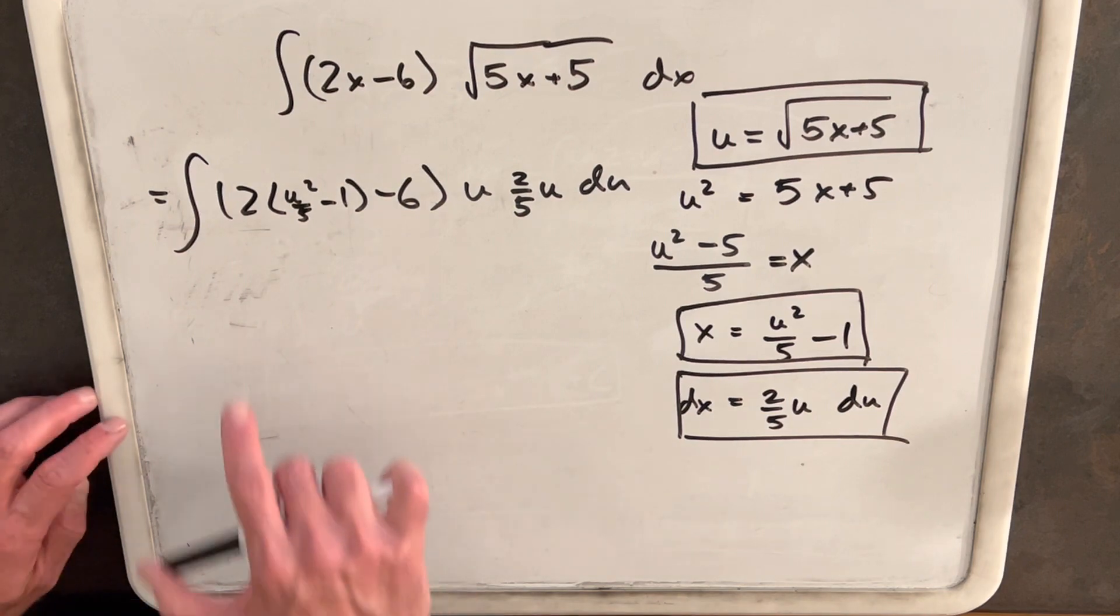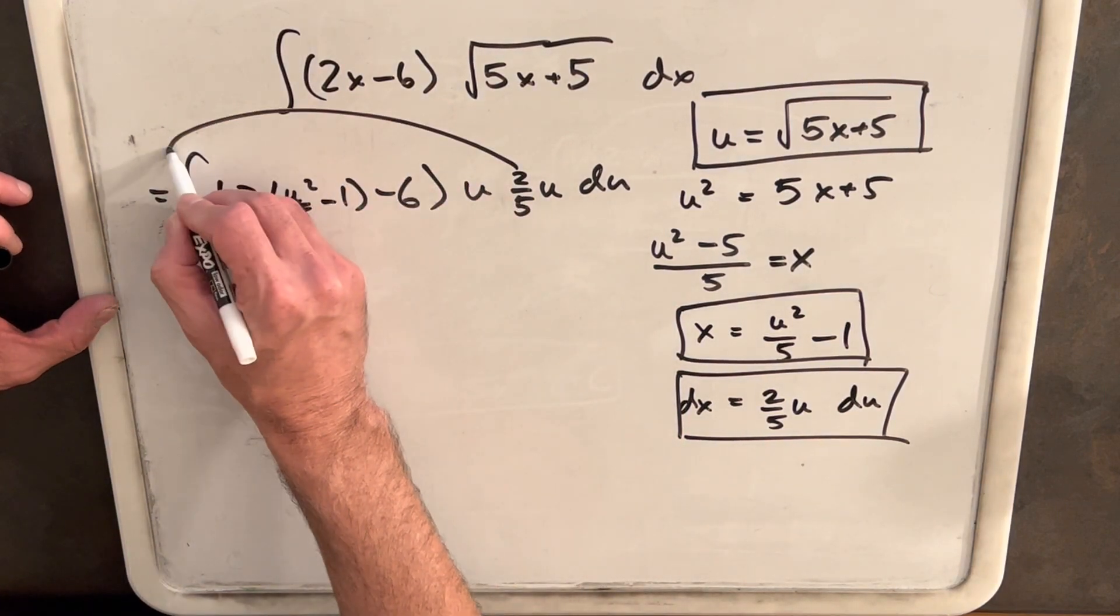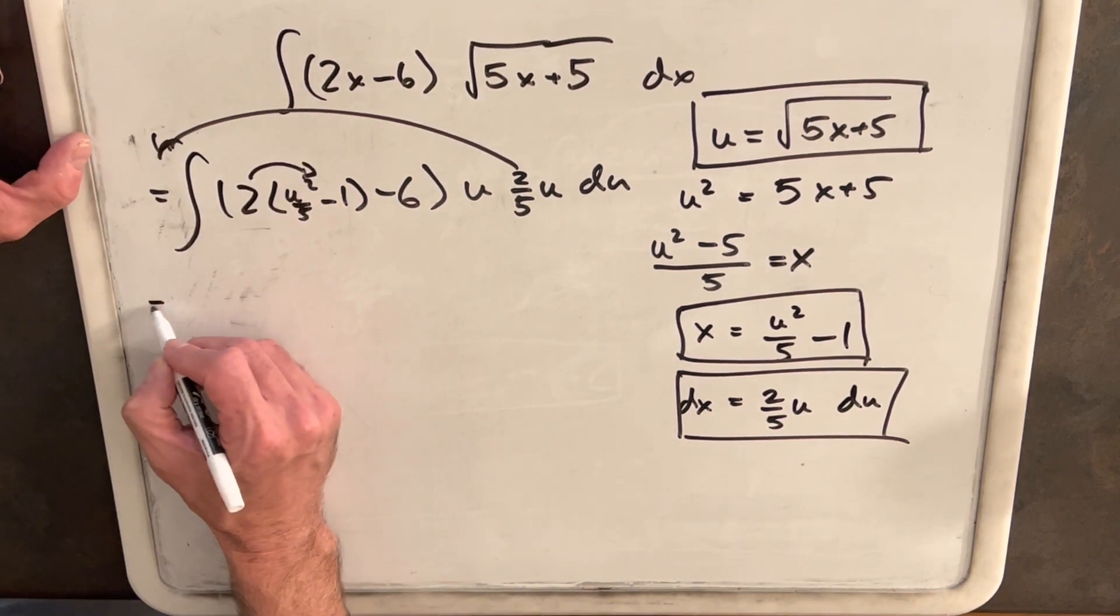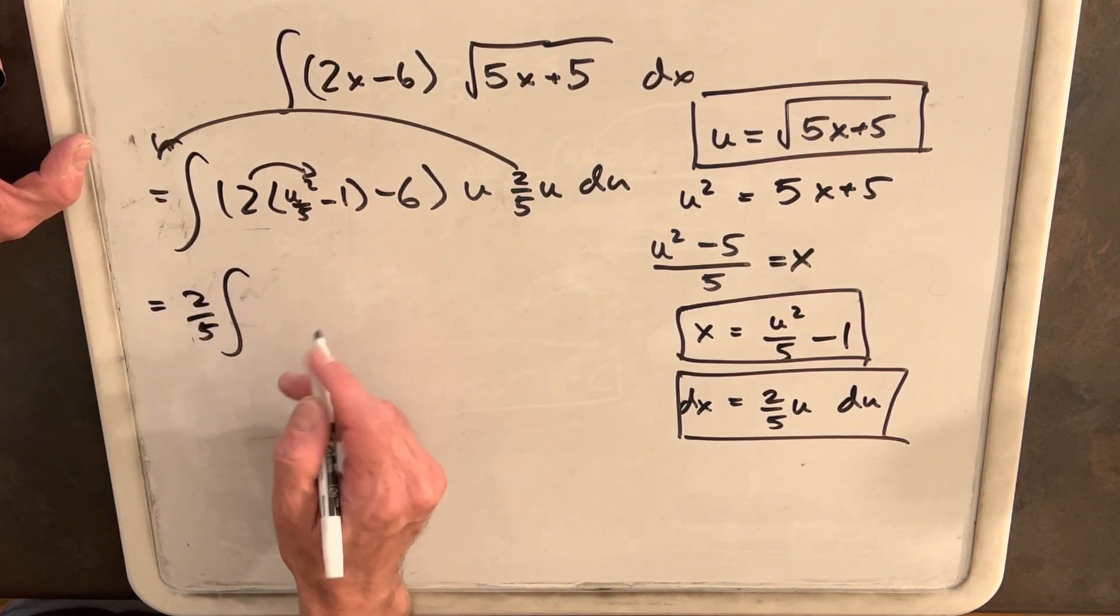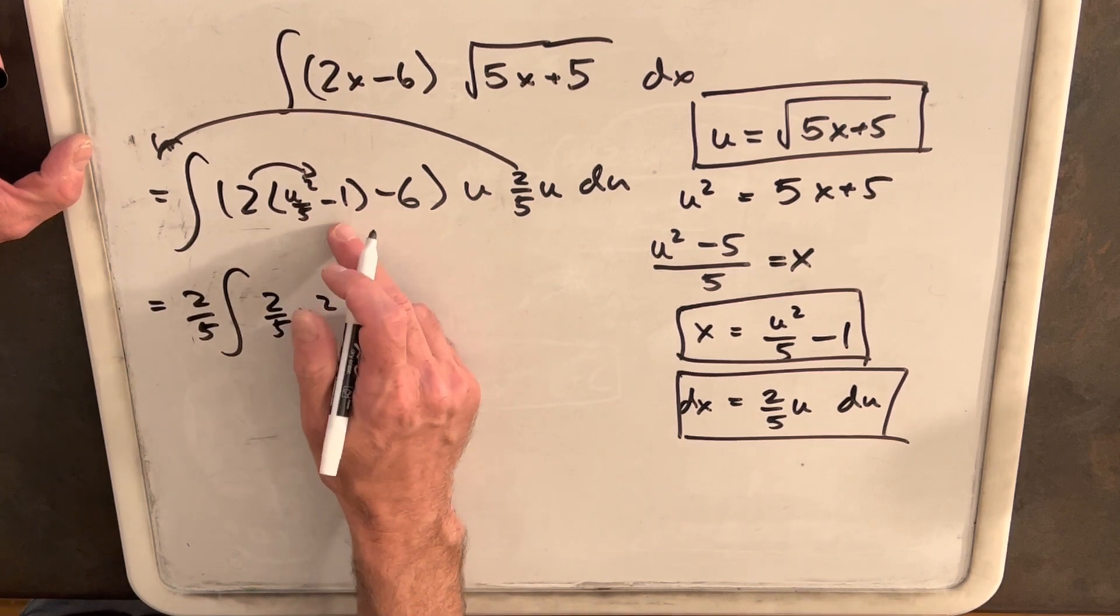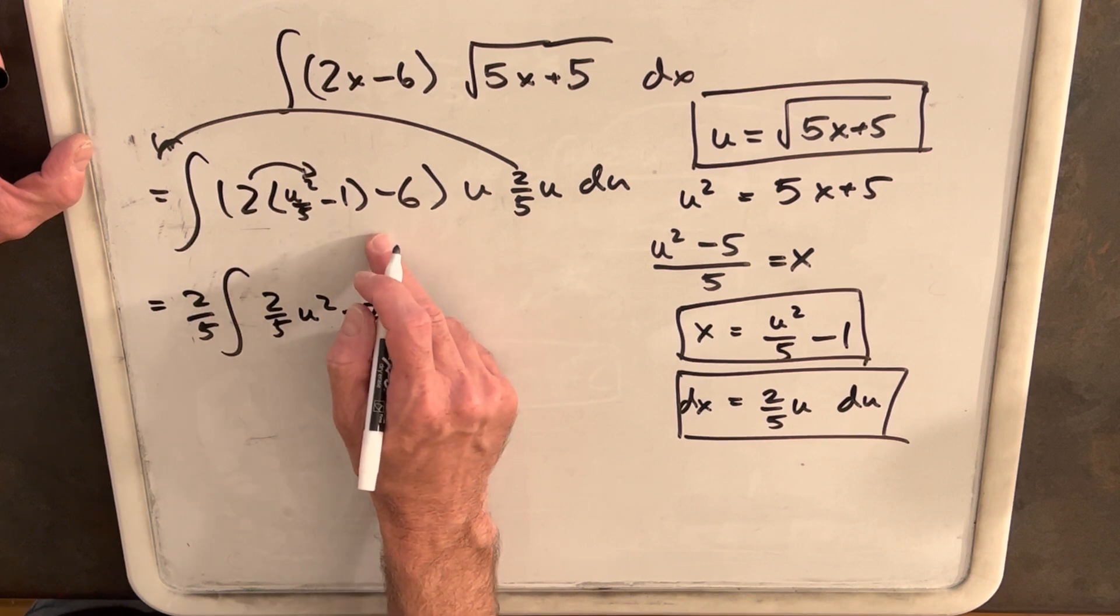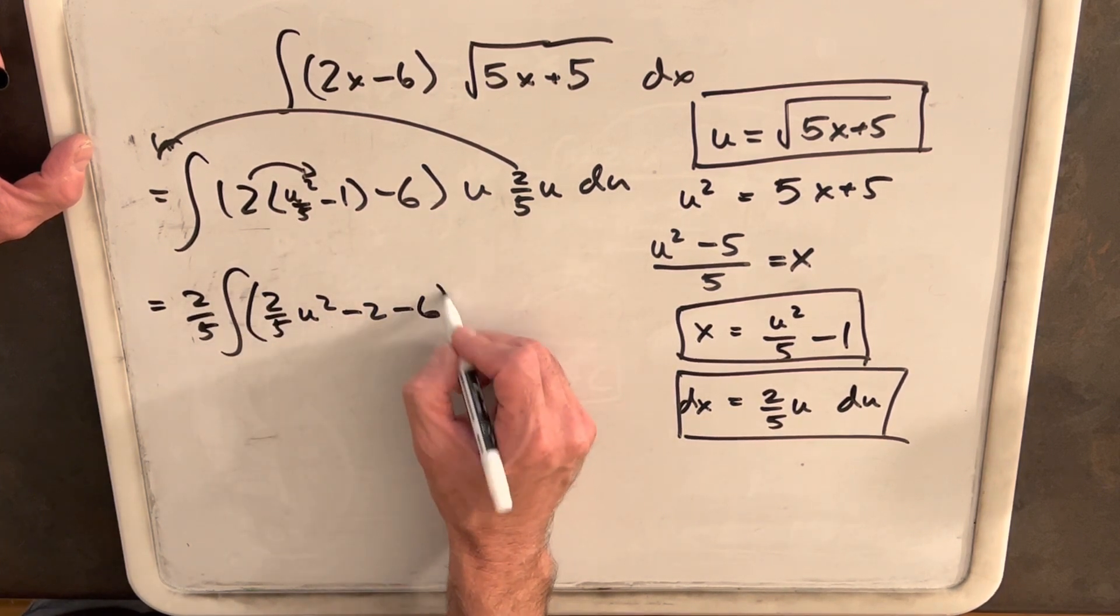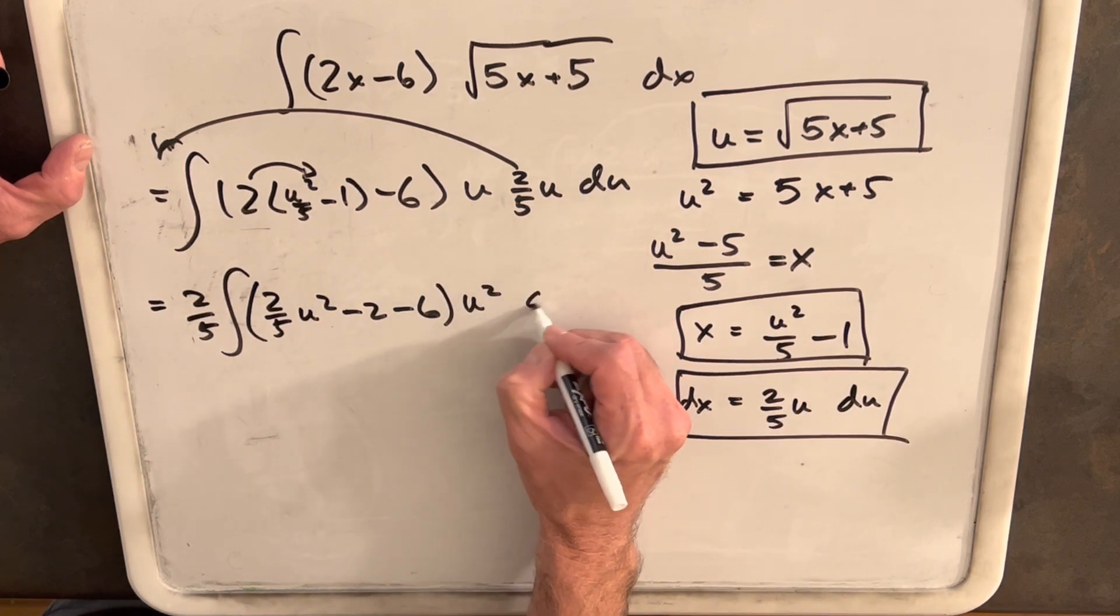So now we just need to do some cleanup, because this is kind of a mess. So we'll take this 2 fifths up front, we'll distribute this in here, and then let's rewrite this. So we'll have our 2 fifths integral 2 fifths u squared. I don't want to mess this up, because it's going to ruin the whole video. 2 times minus 1 is minus 2, minus 6. We've got to keep our parentheses. And then we just have our two u's here. So this is going to be a u squared du.